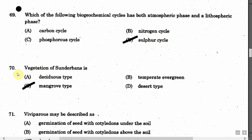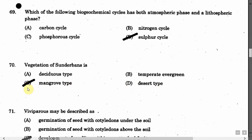The next question is: The vegetation of Sundarbans is — Option A: Deciduous type. Option B: Temperate Evergreen. Option C: Mangrove type. Option D: Desert type. The correct answer is Option C, that is Mangrove type.